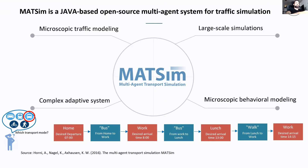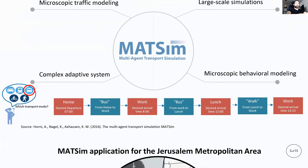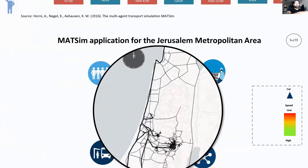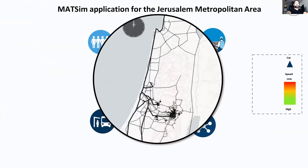Each iteration in MATSim represents a day. We used MATSim to build the Jerusalem metropolitan area model, which is new. We already have a Tel Aviv model, and this is the metropolitan model for Jerusalem.